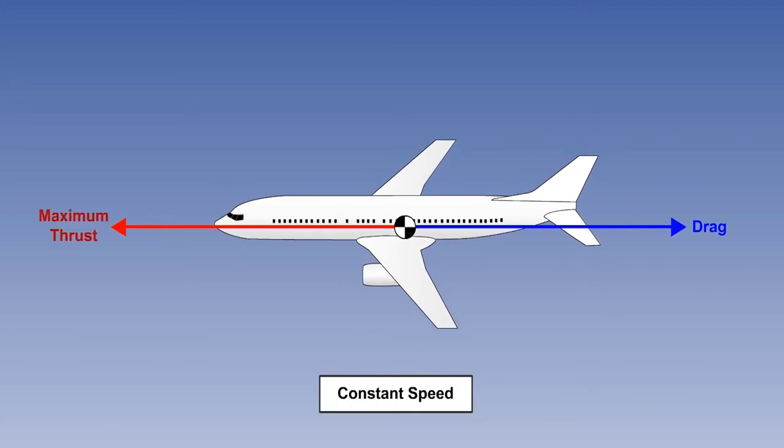At this point, it is not possible to increase the bank or decrease radius. Whether this thrust limit or the maximum load factor is reached first will depend on the g limit and the thrust available.